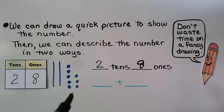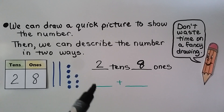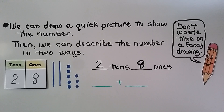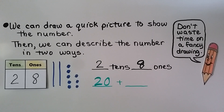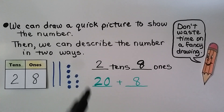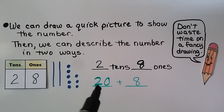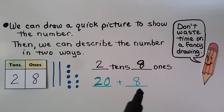That is two tens and eight ones. The other way we can describe it is in expanded form. Two tens is twenty, and eight ones is eight. We can show twenty-eight as two tens and eight ones, or twenty plus eight.